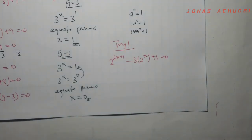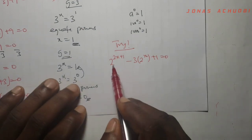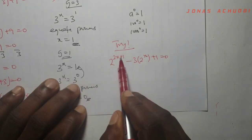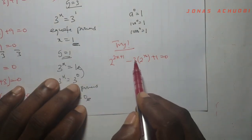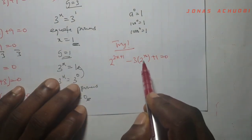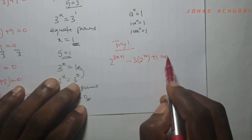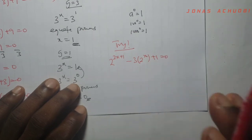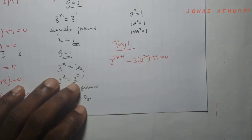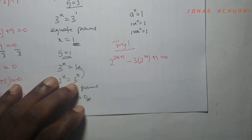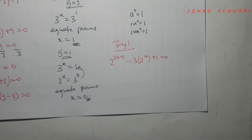You can try on your own to solve 2 raised to the power (2x plus 1) minus 3 into 2 raised to the power (x plus 1) equal to 0, and leave your answers in the comment section below. Thank you and bye-bye.